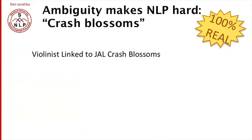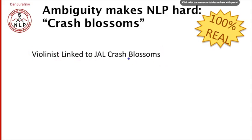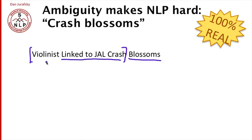Why is natural language processing so difficult? One cute example involves the kinds of ambiguity problems called crash blossoms. Ambiguity is any case where a surface form might have multiple interpretations. A crash blossom is the name for a kind of headline that has two meanings, and the ambiguity causes a humorous interpretation. Reading the first headline — 'violinist linked to JAL crash blossoms' — you might think the main verb is 'linked' and a violinist is being linked to Japan Airlines crash blossoms. But the actual interpretation the headline writer intended has 'blossoms' as the main verb, with 'a violinist' doing the blossoming, and 'linked to JAL crash' as a modifier of violinist.